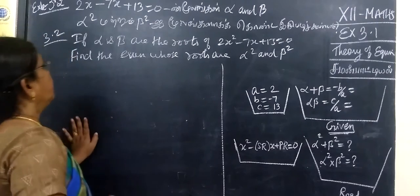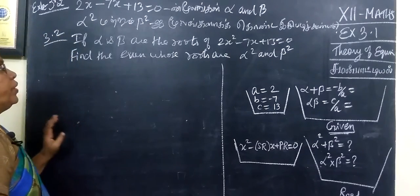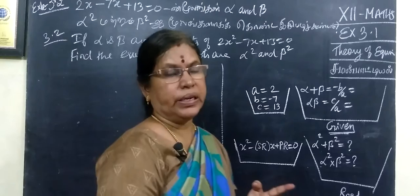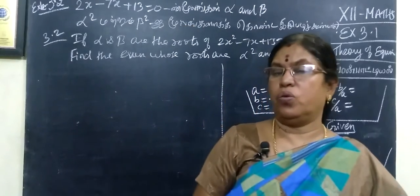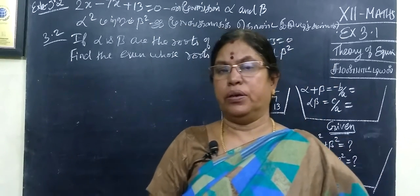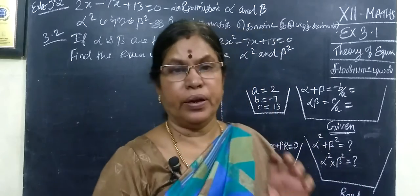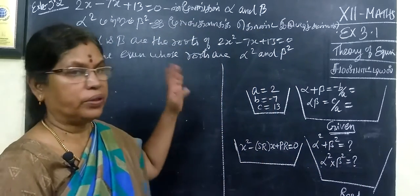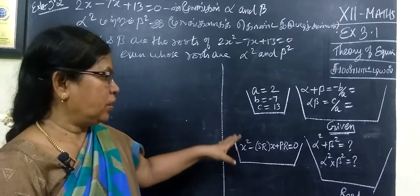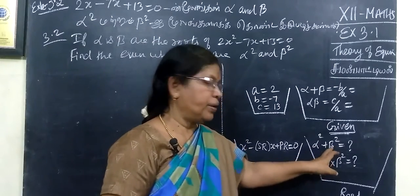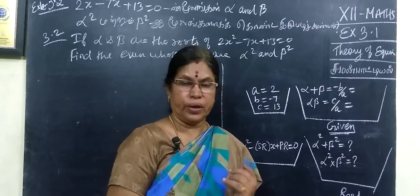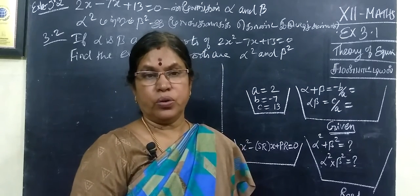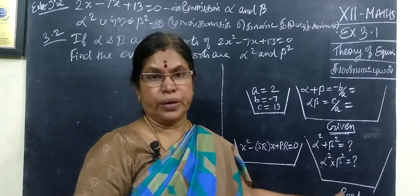For example, 3.2: 2x squared minus 7x plus 13 equal to 0. You are given a quadratic equation whose roots are alpha and beta. You want to find a new quadratic equation whose roots are alpha squared and beta squared.